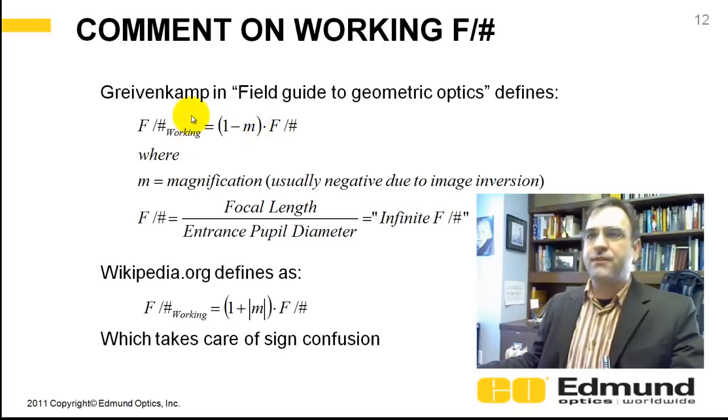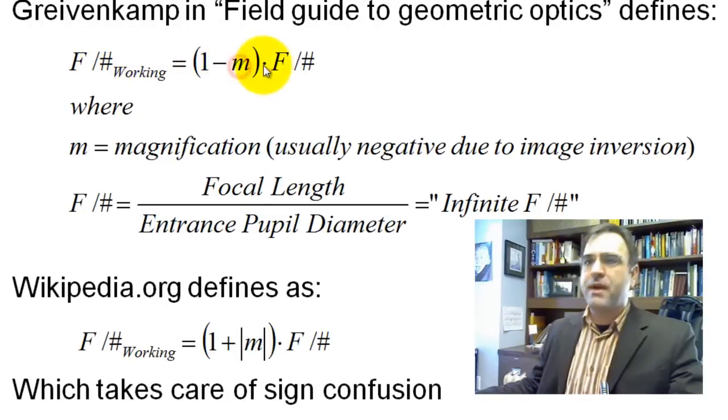And Greivenkamp, in his field guide to geometric optics, defines the working F number as one minus your magnification times your F number, or your infinite F number of focal length by entrance pupil diameter. This magnification is usually negative, and it's negative due to the image inversion.